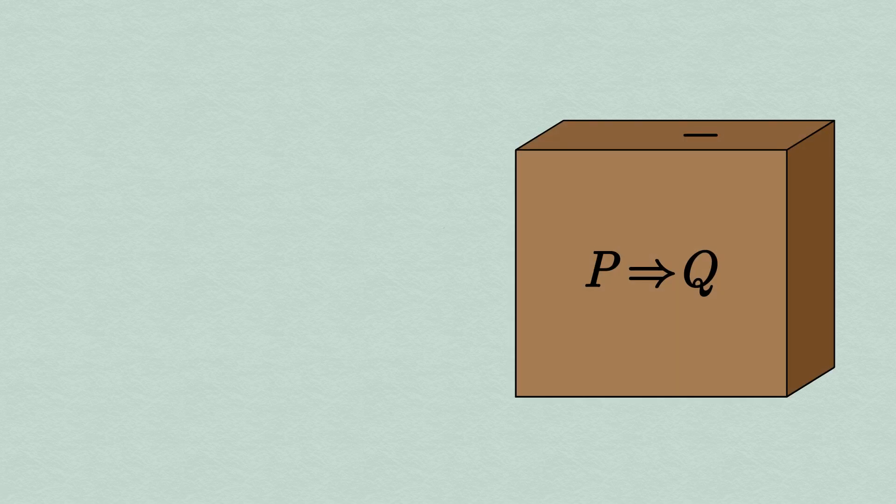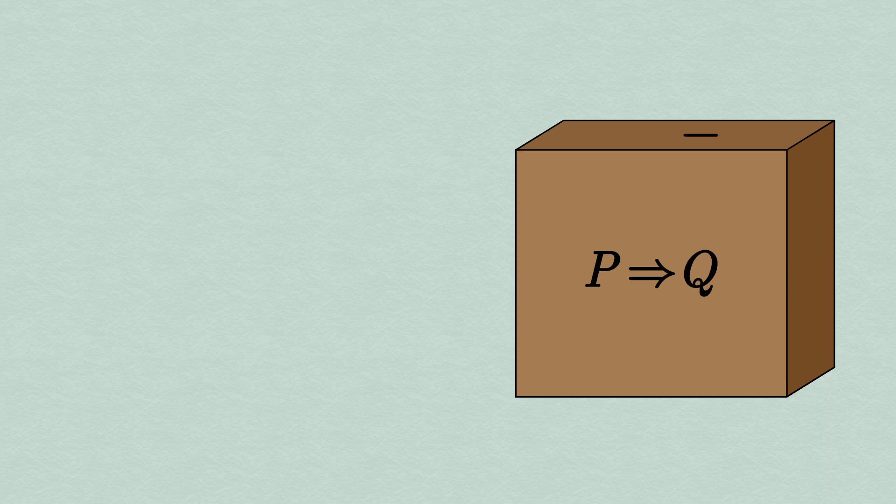As we said earlier, the implication P implies Q is a different sort of logical construction than our first two, not directly involving variables, only statements. As a logical transaction, this operates as another sort of vending machine. If you feed it the verified statement P, then it spits out the verified statement Q.